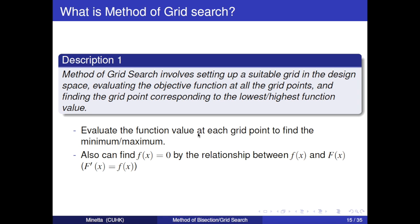In other words, it evaluates the function value at each grid point to find the minimum or maximum. Also, it can find the solution of f(x) equals 0 by the relationship between these two equations. Their relationship can be written as follows. I believe all of us have learned it in mathematical class. Hence, I will not mention it here.